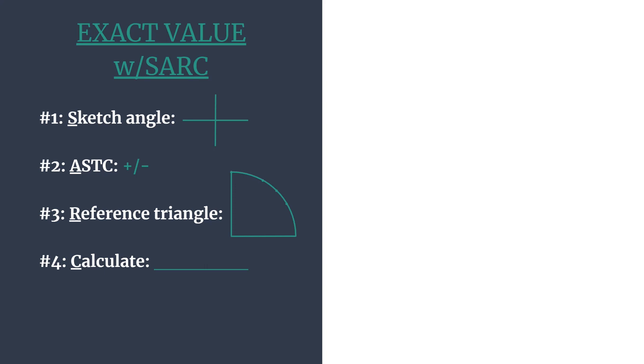SARC is just an acronym to help us keep all our information organized so that we're sure our answer is accurate. You can see it's spelled out in the template on the left. We have S to sketch the angle, A for ASTC and deciding our final sign, positive or negative, R for reference triangle and the corresponding coordinates, and C for calculate, calculating the trig ratio.